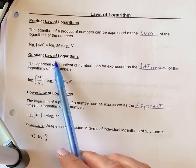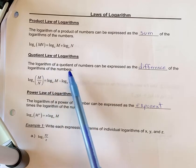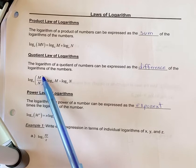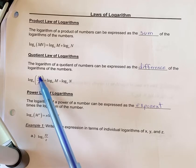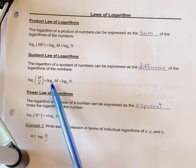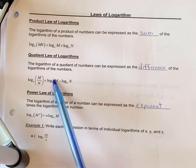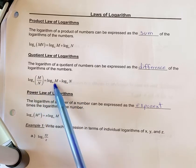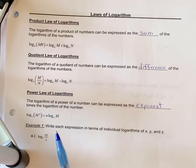Let's look at the quotient law. The logarithm of a quotient of numbers can be expressed as the difference of the logs. If I have an argument where there's a quotient, meaning division, when I expand it, I would put a minus sign. You log each part of that argument, so log m minus log n. The base numbers stay the same as you're moving forward.